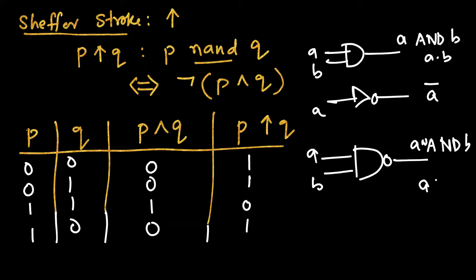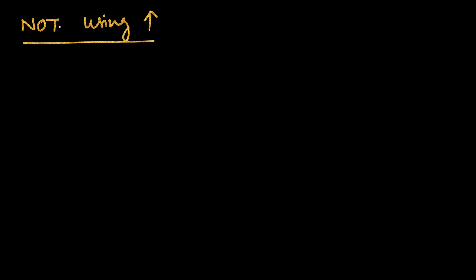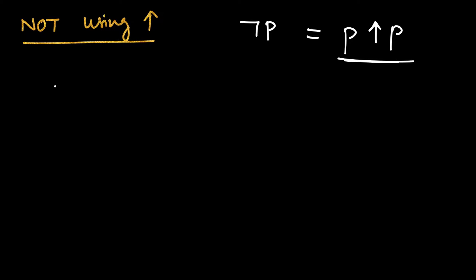Using the NAND gate, can we implement the NOT logic? The solution is that NOT p equals p NAND p. Why is this true? Because if p is 0, then AND of 0 and 0 is 0, so its NAND will be 1. And when p is 1, p AND p is 1, so its NAND will be 0. That is why NOT p equals p NAND p.